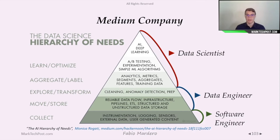In a medium-sized company, we can see three distinct roles. The software engineer is focused on developing the infrastructure that collects the data. The data engineer looks at how to store and transform the data. And then the data scientist handles the analytics part, A/B testing, and the full machine learning development.